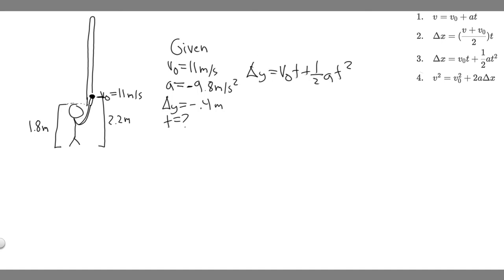So let's just go ahead and do that. Delta y is minus 0.4, which equals v sub 0, which is 11, times t, plus 1/2 times a, which is minus 9.8, times t squared. So 11t, and then 1/2 times minus 9.8 is minus 4.9t squared. And then I'm going to move this to the other side. And what you should notice is we get 4.9t² minus 11t minus 0.4 equals 0.